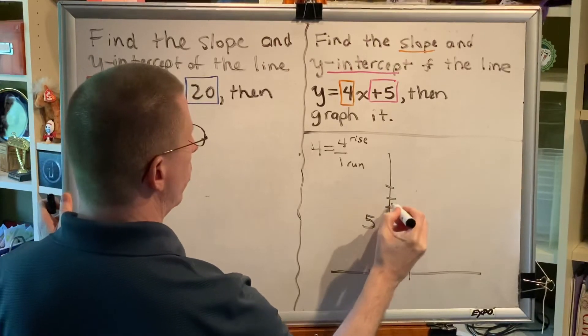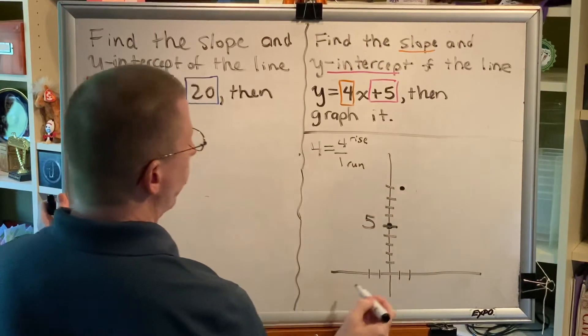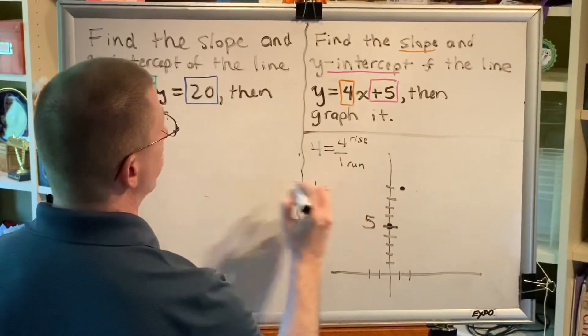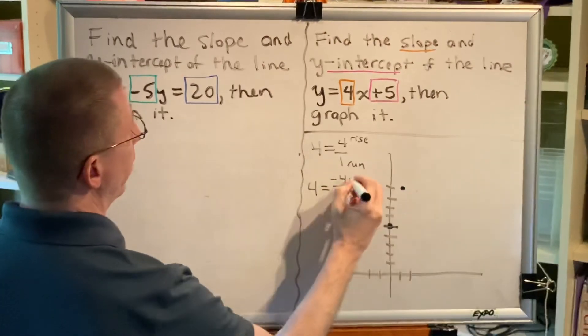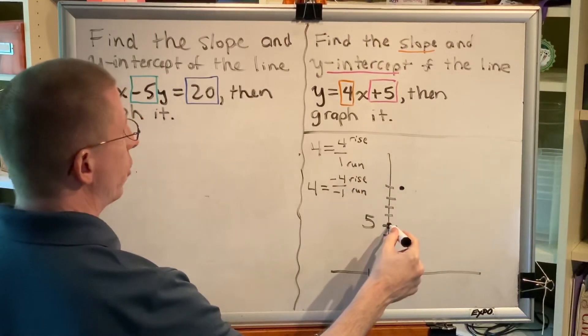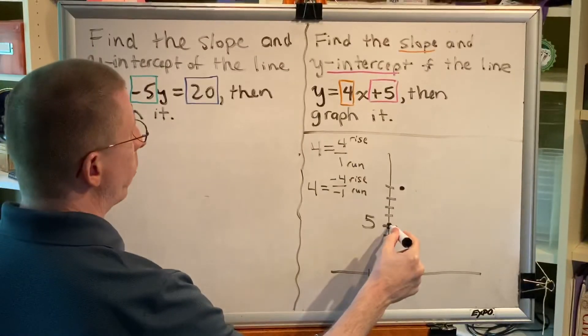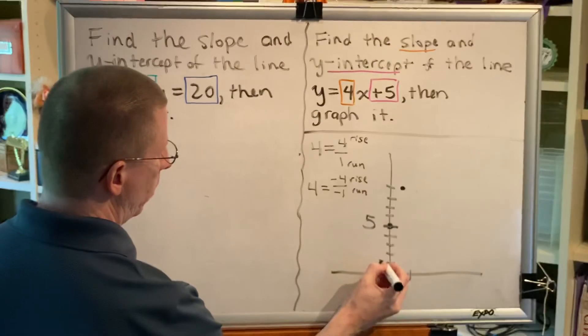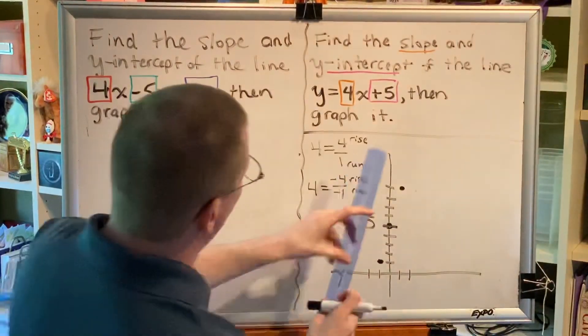Now, another interesting aspect of slope is that it can be written with two negatives to still create the positive 4. 4 is the same thing as negative 4 divided by negative 1. And so, when we rise and run, we can go back to our y-intercept and go the reverse direction. Rising negative 4 would be actually 4 down, and running negative 1 would be 1 to the left. 1, 2, 3, 4 down, and 1 to the left. This gives me three points that I can use with my straight edge to graph the equation of my line.